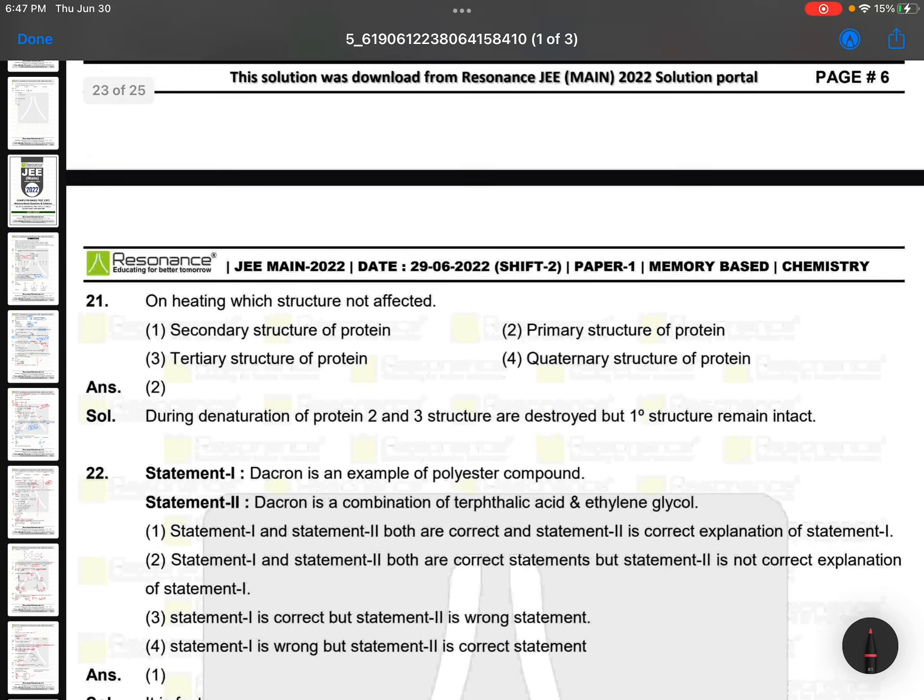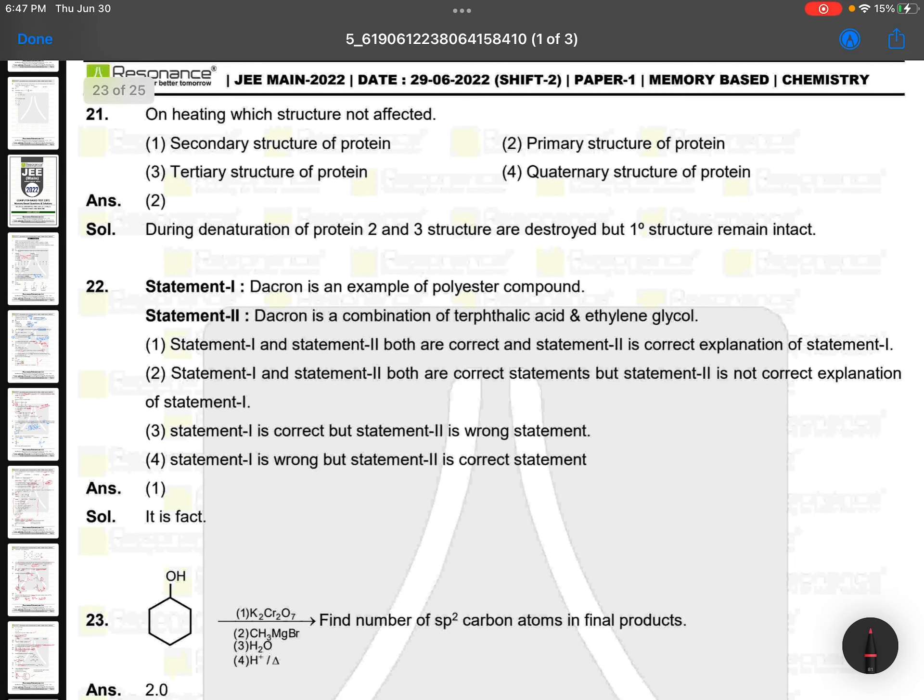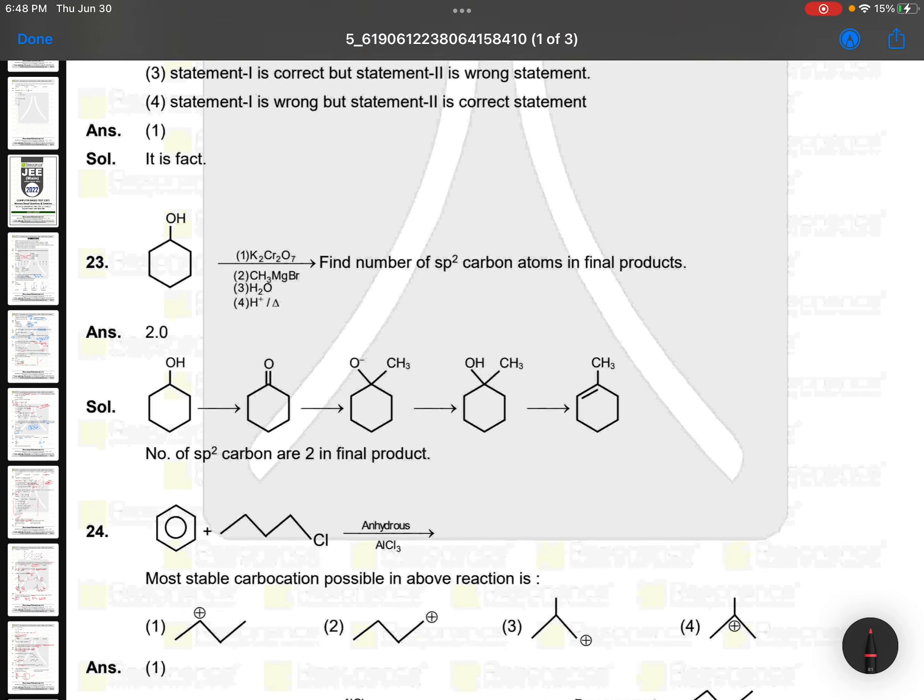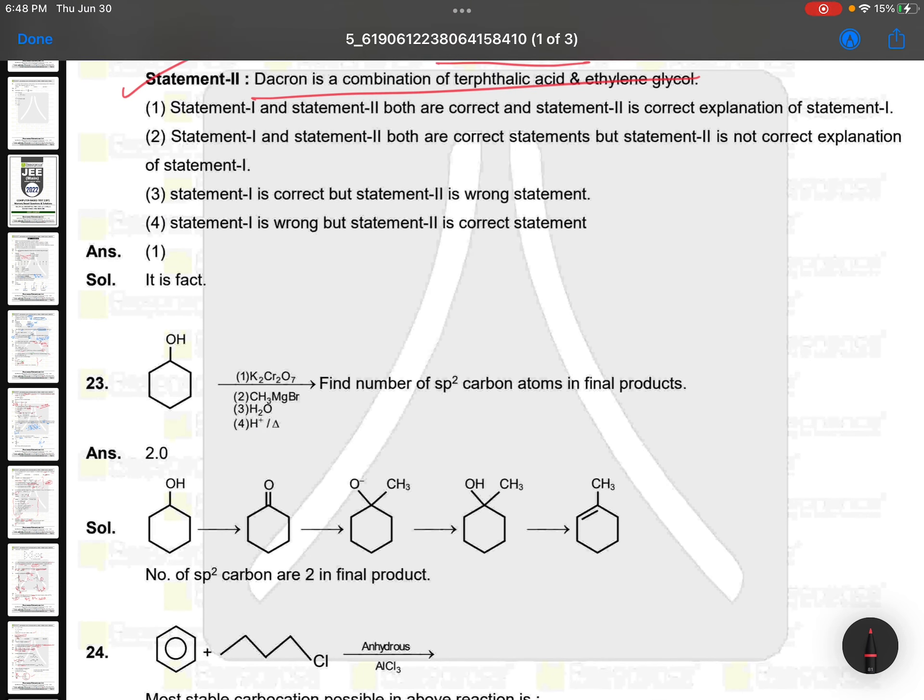On heating, which structure not affected in proteins? He is asking: in proteins, primary structure is not affected. Remaining all can be destroyed. Dacron is an example of polyester, right? Dacron or Terylene. That is because of terephthalic acid. Anything like both are correct. I think it should be given as both are correct, both are wrong like that. I don't think that this is assertion-reason. It must be both statements correct, both statements wrong, one correct second one like that.